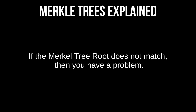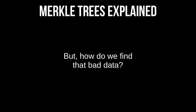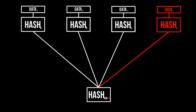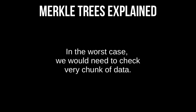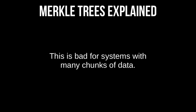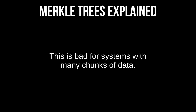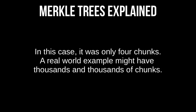If the Merkle root does not match, you know you've got a problem. We know there's a bad chunk of data, but how do we find where it is? With just concatenating and hashing everything together, the worst case scenario is you'd have to check every single chunk of data until you got to the very last one — say, data X — and realize that's the bad one. With thousands and thousands of leaves, going through them one at a time is going to take a long time.